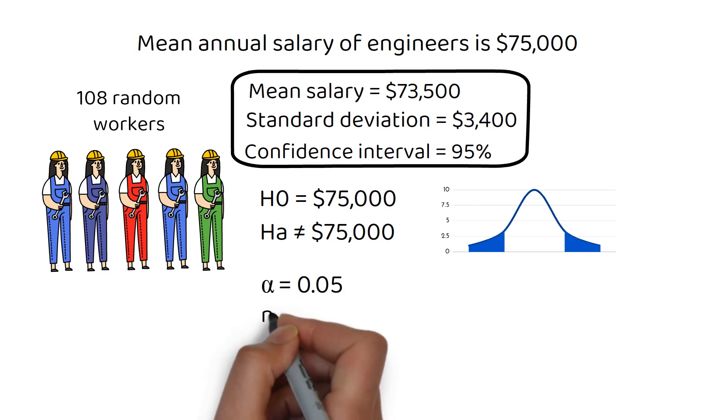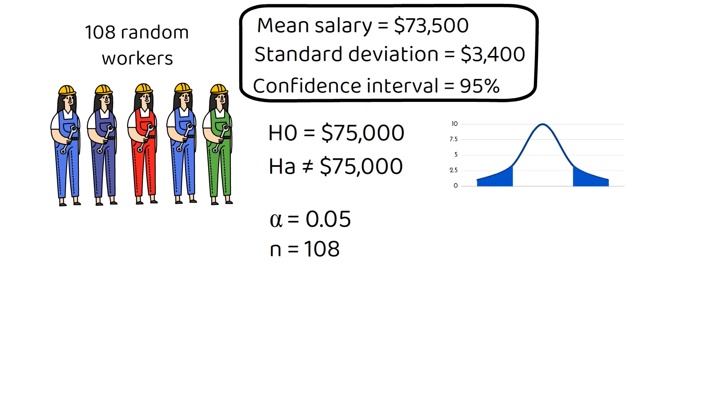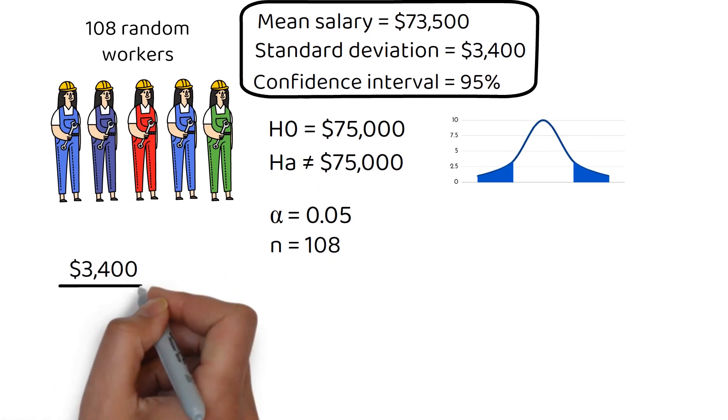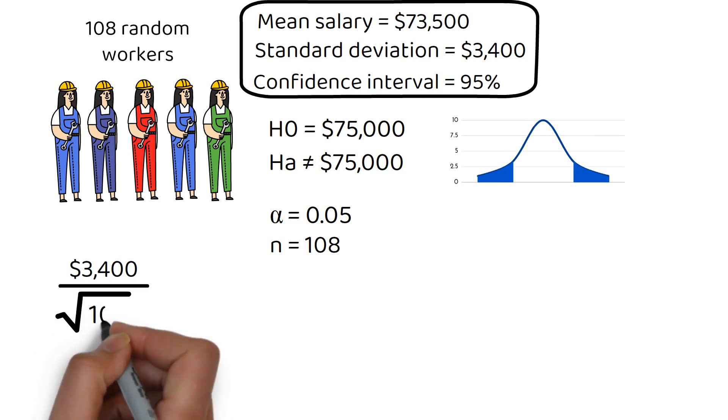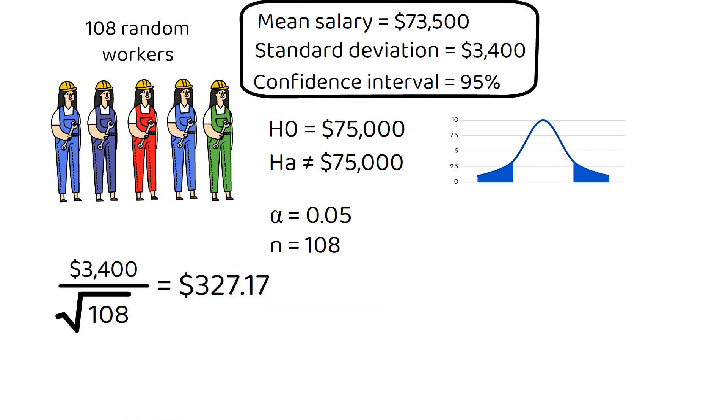Since the sample size is greater than 30, it is 108, we use the Z-test for the mean. The sample standard deviation of $3,400 must be divided by the square root of the sample size, 108. That gets us about $327.17. In actuality, the difference from the mean is $1,500. This $1,500 is thus 4.58 standard deviations below the mean.